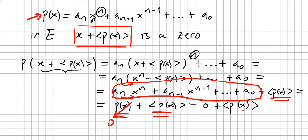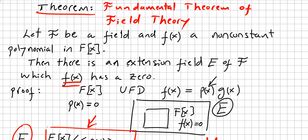So zero plus ⟨p(x)⟩ — this concludes the proof, because p(x) has a zero here. We just proved that if F is a field and f(x) is a non-constant polynomial in the ring of polynomials, then there is an extension field E of F in which f(x) has a zero. So if a polynomial has no zero in the ring of polynomials, there will always be an extension field where it has a zero.